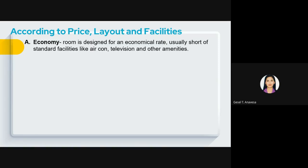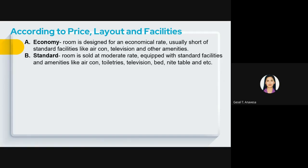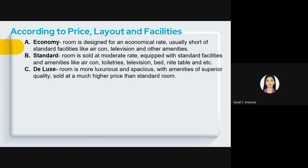According to price, layout, and facilities: an economy room is designed for an economical rate with standard facilities like aircon, television, and basic amenities — good for budget-friendly travelers. A standard room is sold at moderate rates and equipped with standard facilities and amenities like aircon, toiletries, television, bed, and night table. A deluxe room is more luxurious and spacious with amenities of superior quality, sold at a much higher price than the standard room.